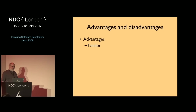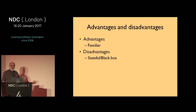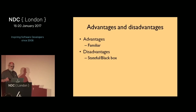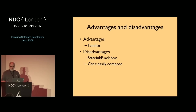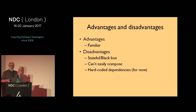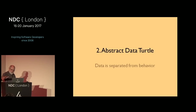Advantages and disadvantages of OO: the big advantage is it's really familiar to most people. The disadvantages — it's stateful, it's a black box. I call this thing but I don't get any response and can't see inside it. Hard to test because I can't easily set the turtle's position. Can't really compose them — if I want two turtles I have to create a whole new class. Also we have hard-coded dependencies: the logging technique and the canvas.